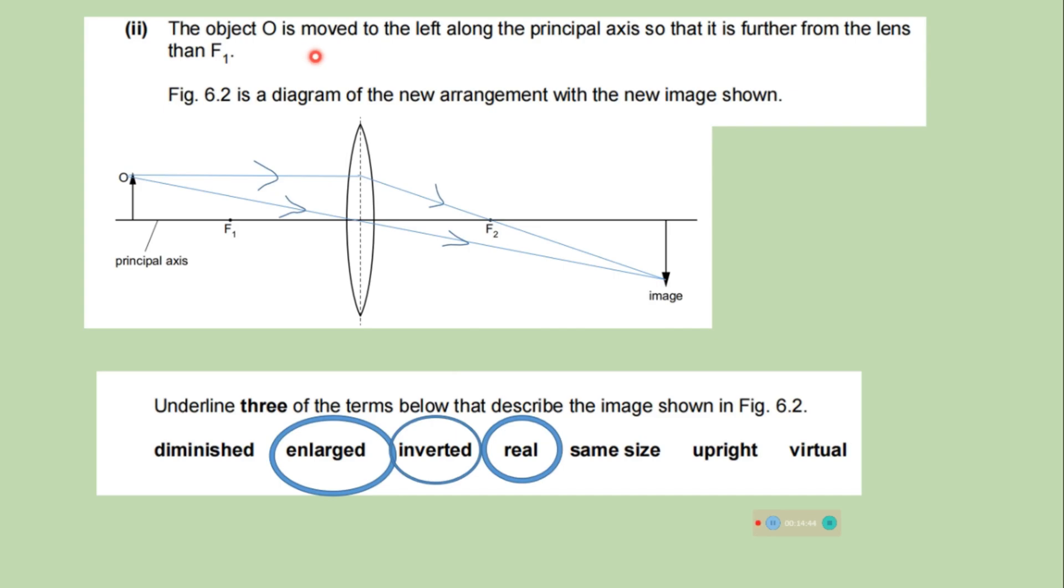The object O is moved to the left along the principal axis so that it is further from the lens than F1. This figure shows a new arrangement. Underline 3 of the terms below that describe the image shown in the figure. So this is an image and we can see that it is enlarged as compared to the object and inverted. And it is a real image. So we have to circle these three qualities of image.